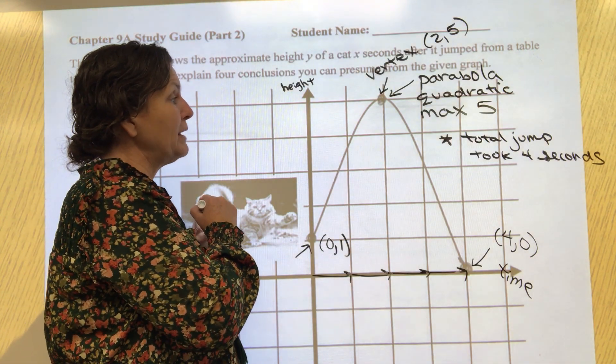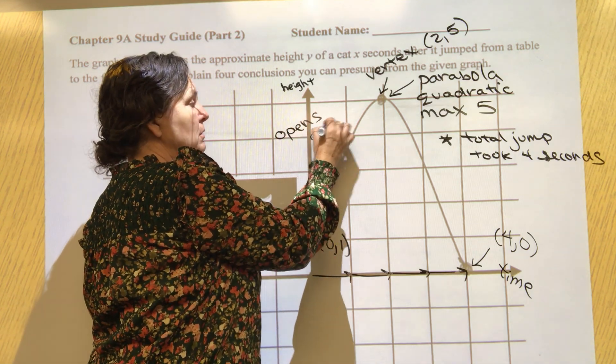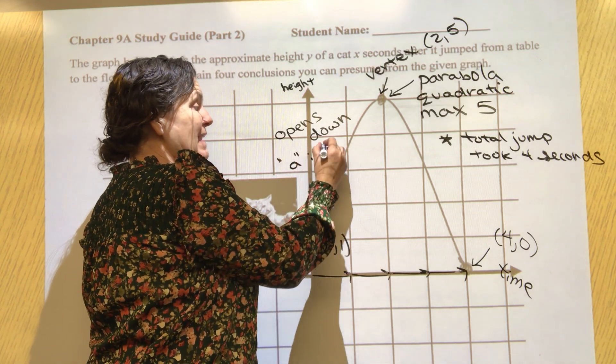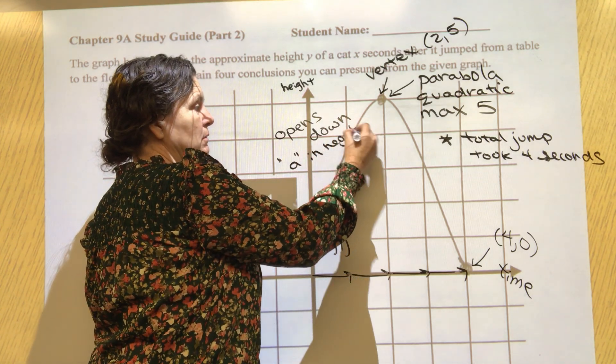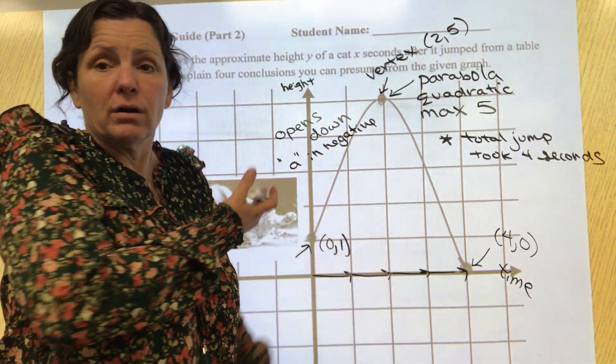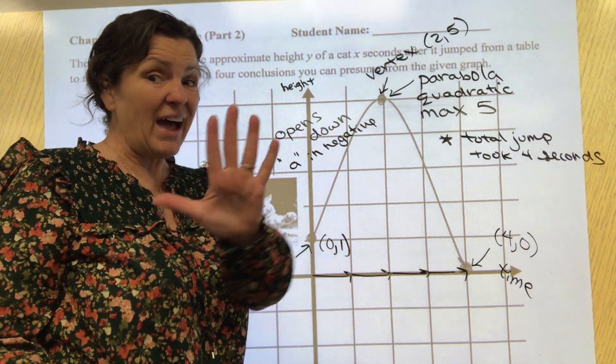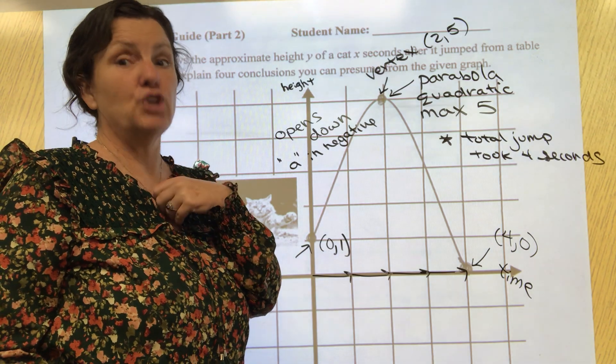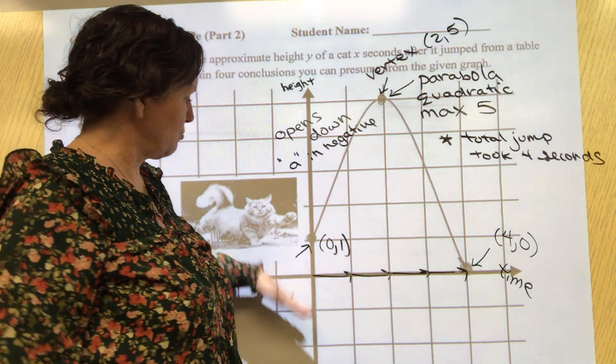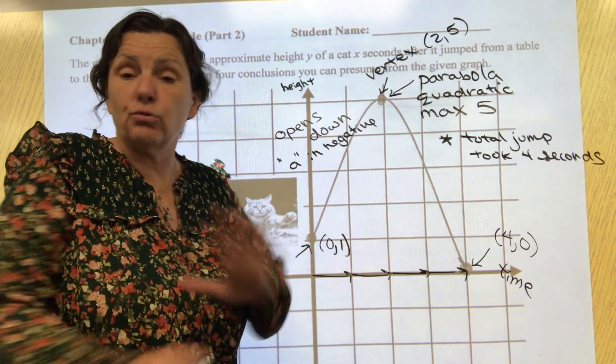You could tell me that this is a parabola that opens down, which would imply that the a value of the equation is negative. There are so many conclusions that you can give me - pick four and put them on your study guide. Now the actual test is five conclusions and it's about a frog jumping from the ground to the ground, so there's no table and elevation.